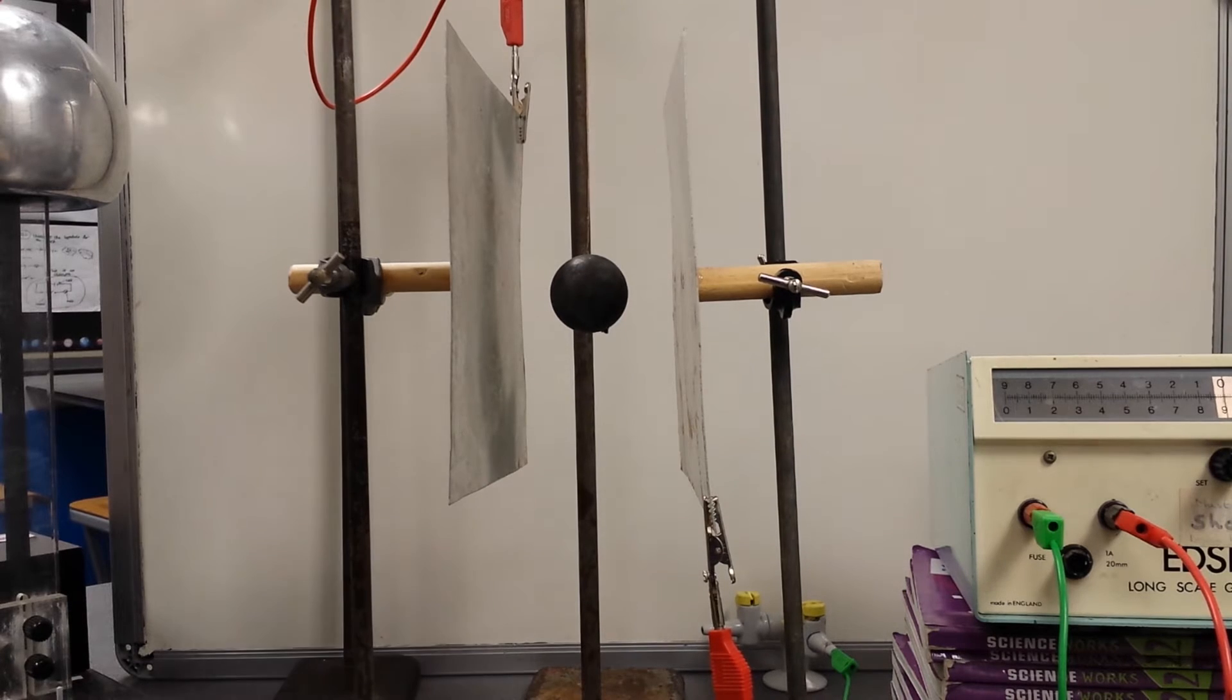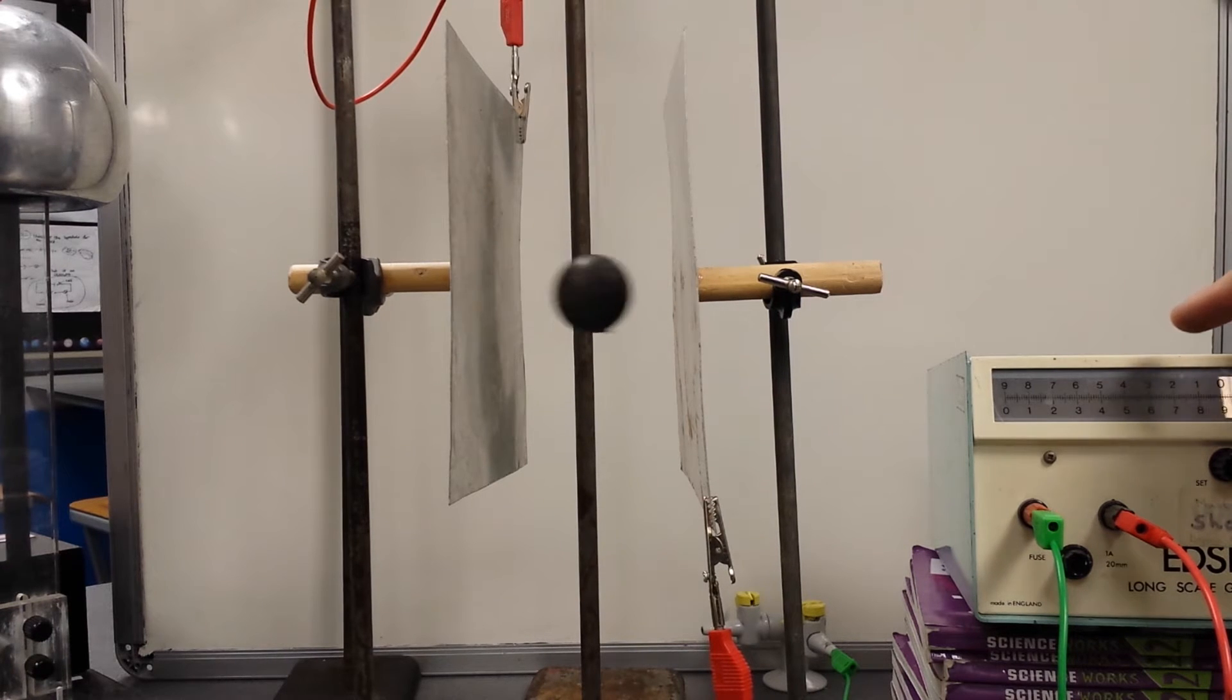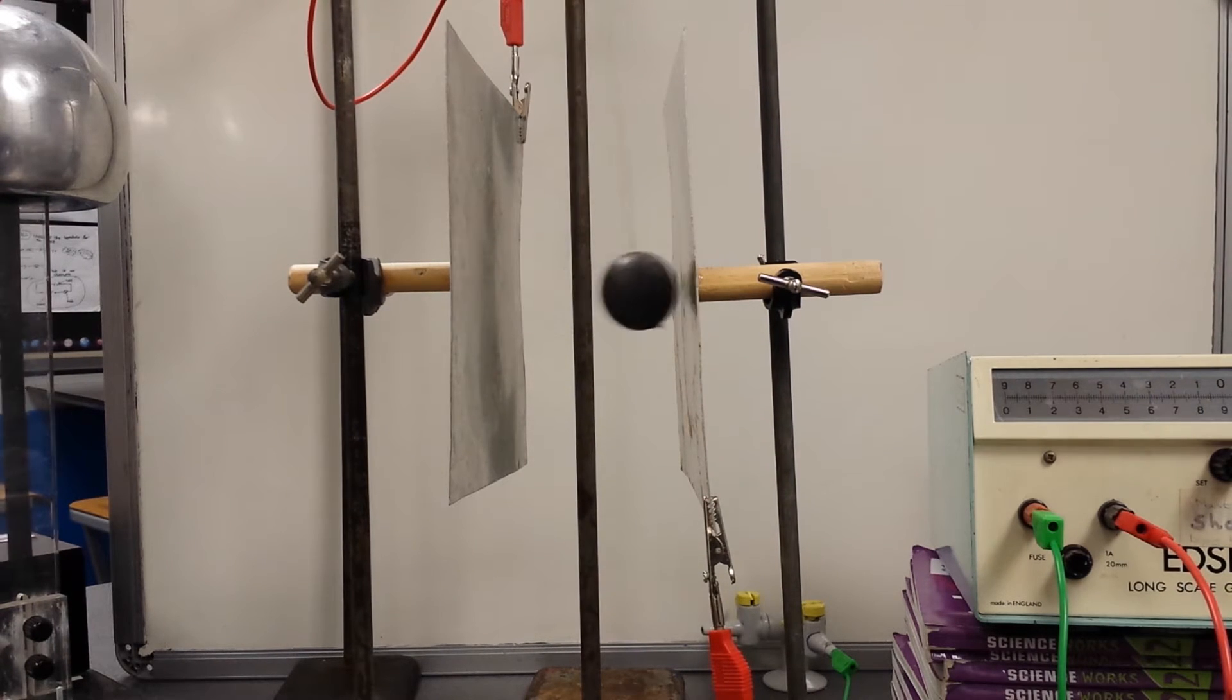Let's see what happens. We're going to switch on the Van de Graaff. The belt's moving, a little bit noisy. The ping pong ball, which has been coated in graphite and is just hanging from a string, is moving backwards and forwards. Hopefully you can see right out here we've got a movement in the light beam.